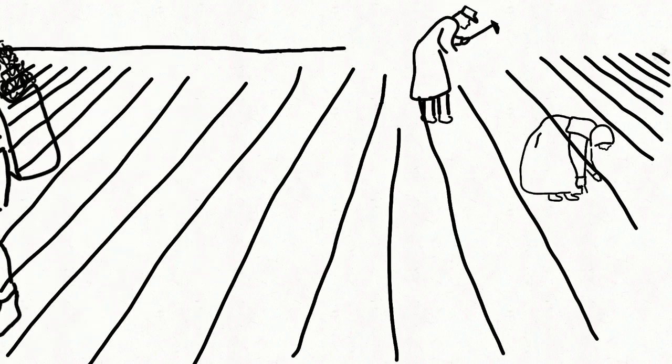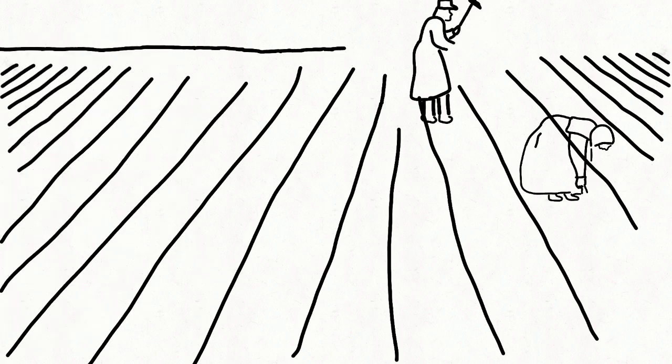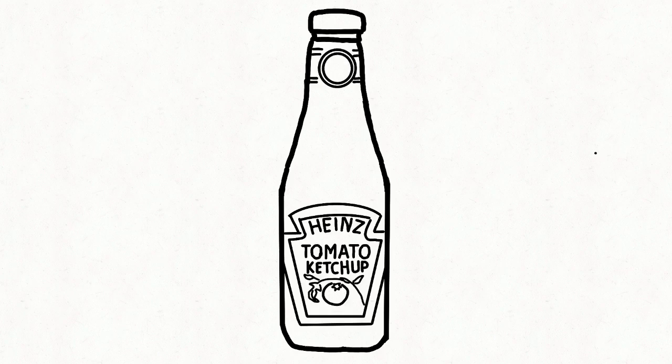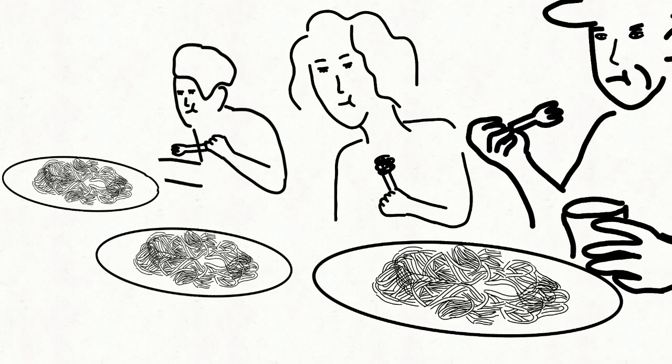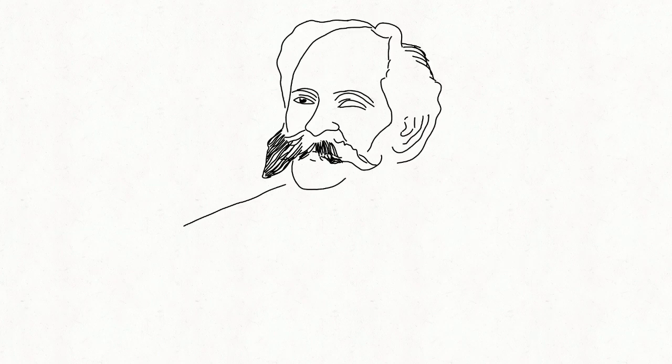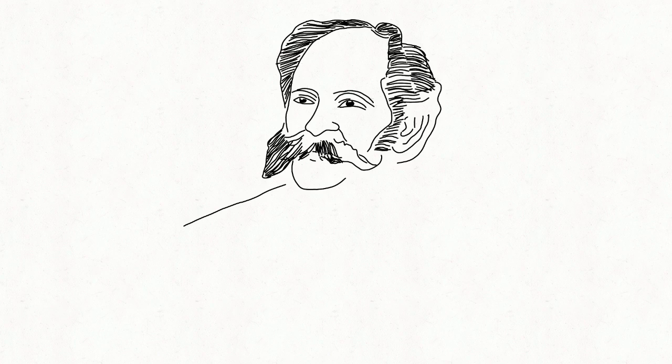Modern ketchup emerged in the early years of the 20th century, out of a debate over the use of sodium benzoate as a preservative in condiments. Harvey W. Wiley, the father of the U.S. Food and Drug Administration, challenged the safety of benzoate which was banned in the 1906 Pure Food and Drug Act. In response, entrepreneurs including Henry J. Heinz, pursued an alternative recipe that eliminated the need for that preservative.